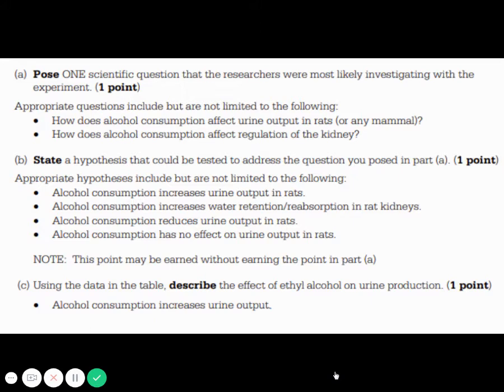State a hypothesis that can be tested. You have to actually state urine output increases or urine output decreases or there's no change in urine output. It needs to be something that you can actually test and see if that happened. And then finally, it asks you to describe the effect of ethyl alcohol on urine production.